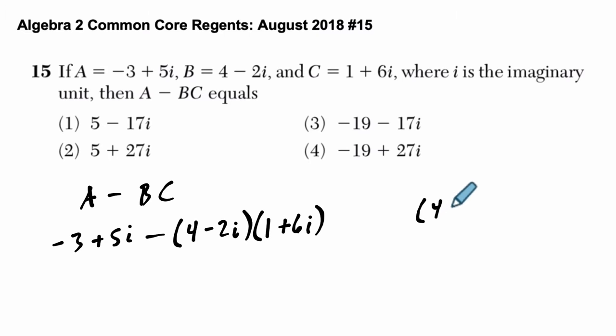I'm going to say, what is 4 minus 2i and 1 plus 6i? Well, 4 times 1 is 4. 4 times 6i is 24i. And then we repeat the process with the second term. Negative 2i times 1 is negative 2i.